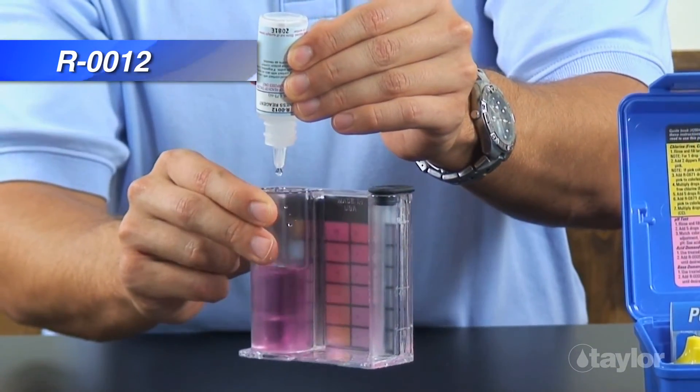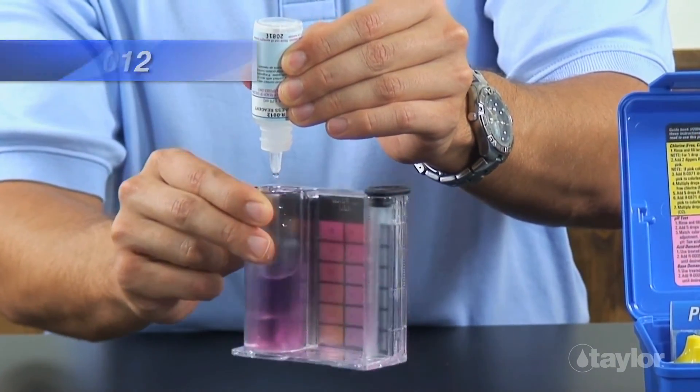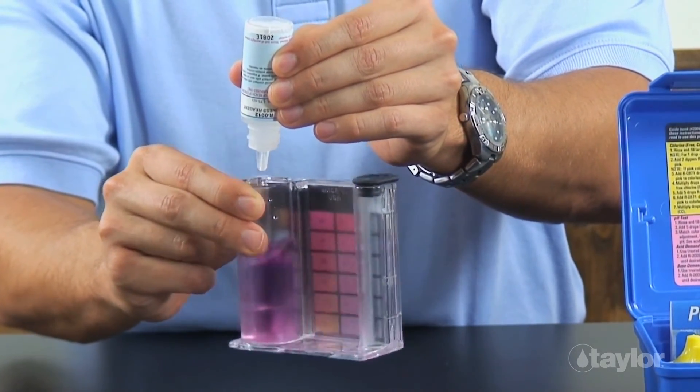Add reagent 12 drop-wise. After each drop, count and swirl to mix until the color changes from red to blue.